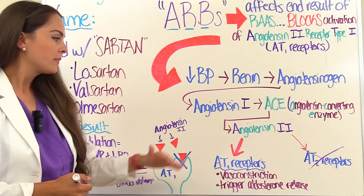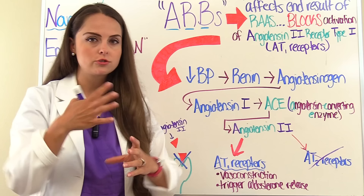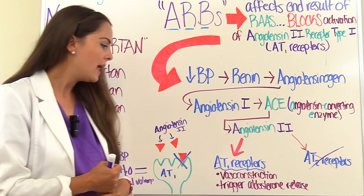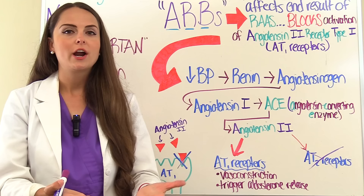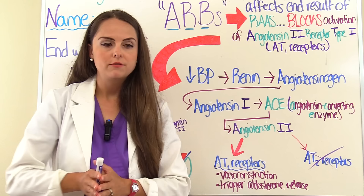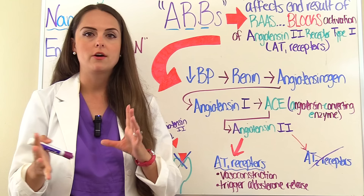When angiotensin 2 binds with the type 1 receptor sites, you get vasoconstriction of the vessels, which increases systemic vascular resistance and increases blood pressure. It also triggers the adrenal cortex to release aldosterone, which causes the kidneys to retain sodium and water but excrete potassium, increasing blood volume. If you increase the amount of water going through a hose and constrict it down, that majorly increases the pressure — the same concept applies to vessels in our body.